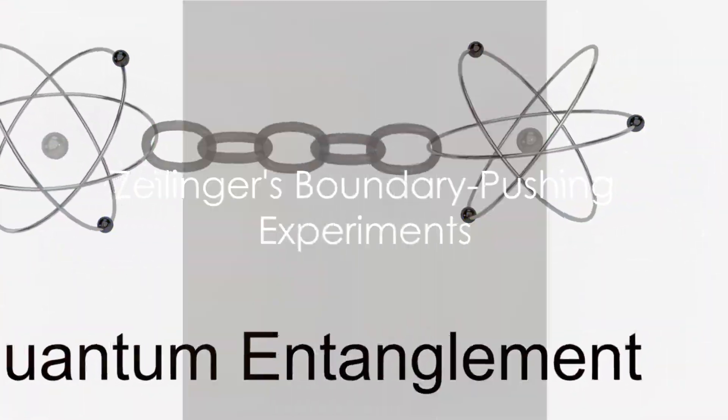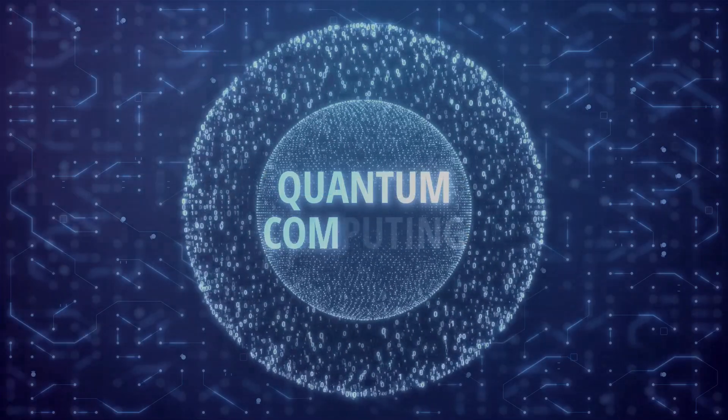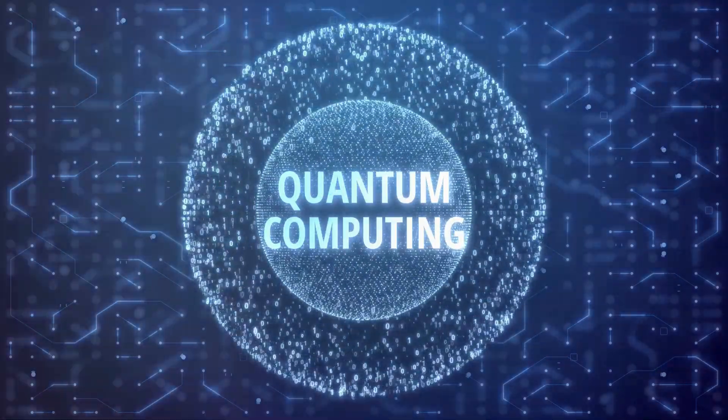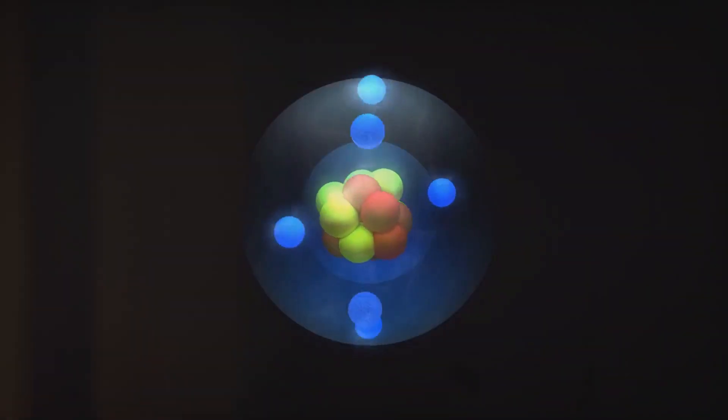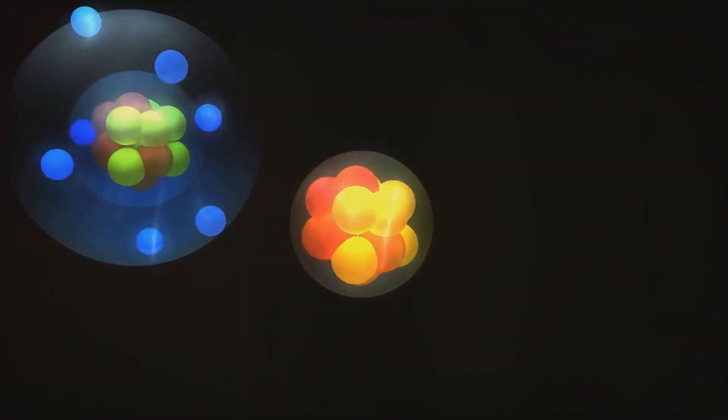In the 1990s and beyond, Anton Zeilinger took the reins and pushed the boundaries of our understanding of quantum entanglement. Zeilinger's experiments showed that particles lack properties prior to measurement and exhibit correlations regardless of distance, reinforcing the idea that the universe is not locally real.